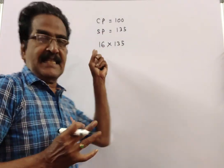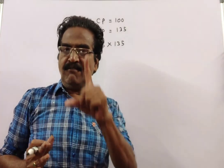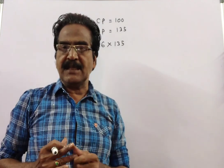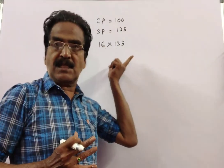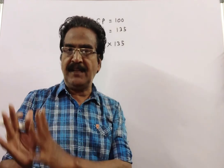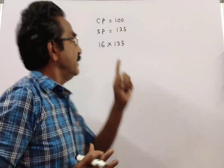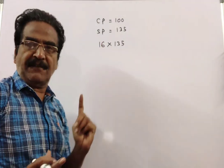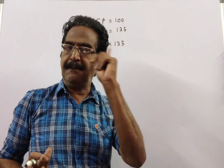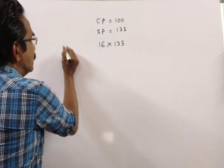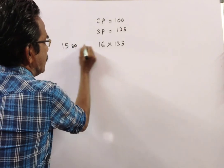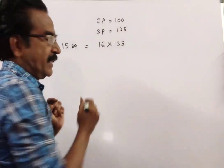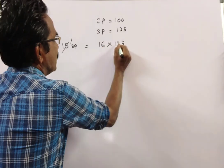But friends, he is giving one article free. So he has to realize this amount from only 15 articles. That means 16 into 135 is equal to the selling price of 15 articles. So the selling price of 15 articles equals 16 into 135.